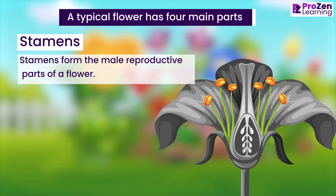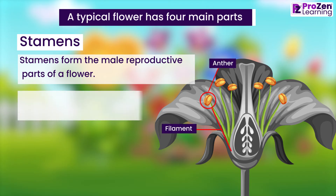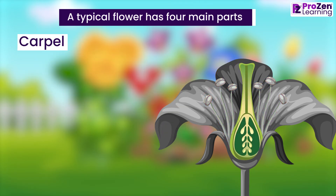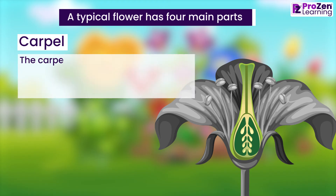Each stamen consists of a long narrow filament with an anther at its tip. Anthers produce pollen grains which contain the male cells. Pollen grains appear as a powdery material on the anthers.